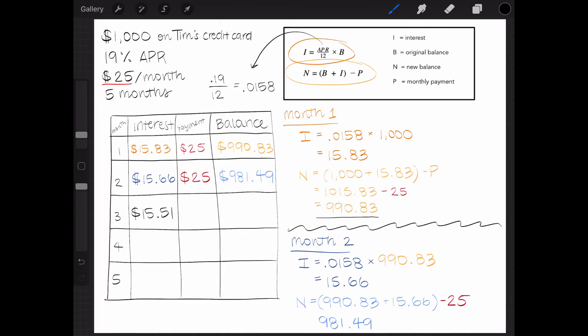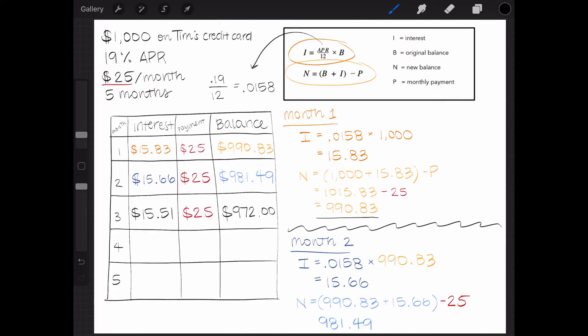So what is Tim's balance for month 3? The interest of $15.51 plus the previous month's balance of $981.49 minus $25 equals $972.00. Another high five to you if you got it.